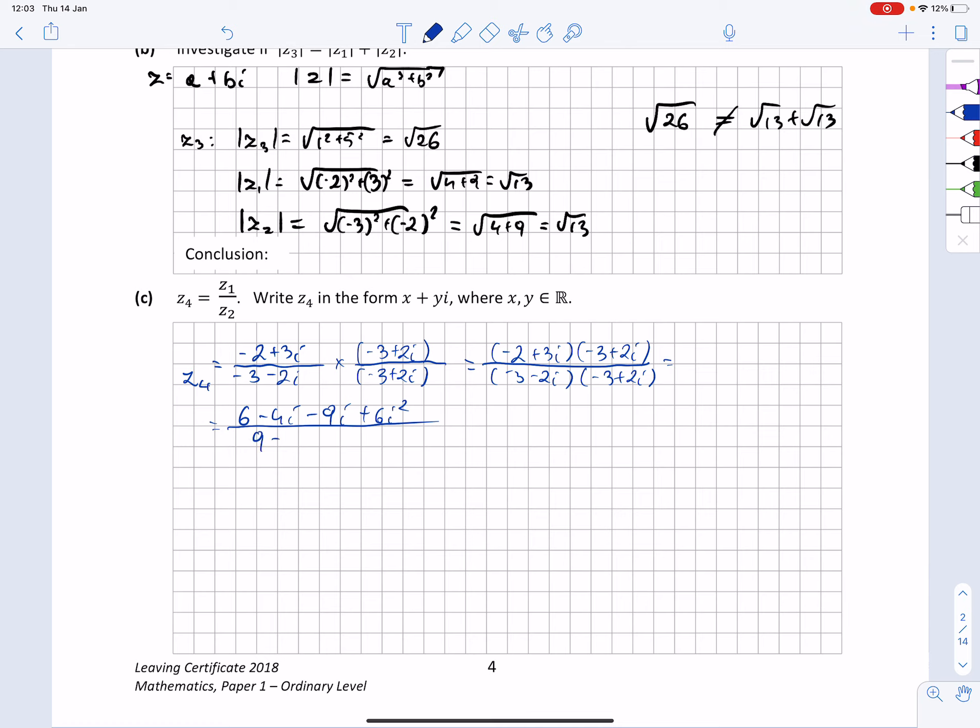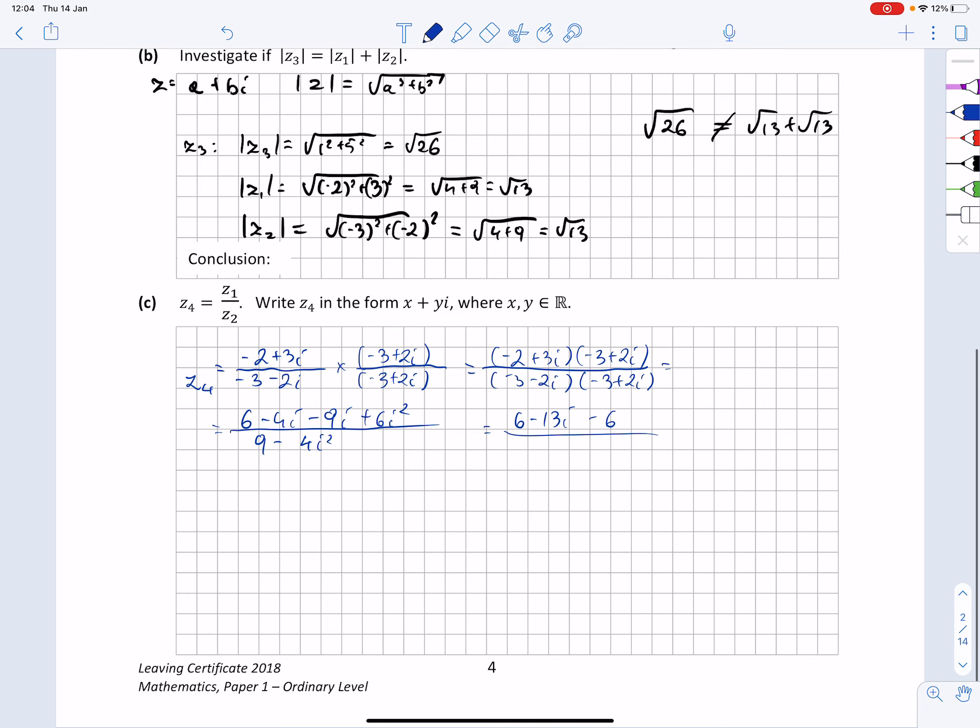So let's simplify above the line: 6 minus 4i minus 9i and minus 6, and below the line 9 minus 4. I'm going to rewrite it as 9 plus 4, because remember that i squared equals minus 1. So let's tidy it up again to get 6 minus 6 is 0 minus 13i, all that divided by 13, gives me the final result of 0 minus i.